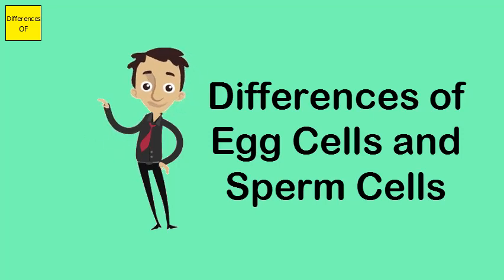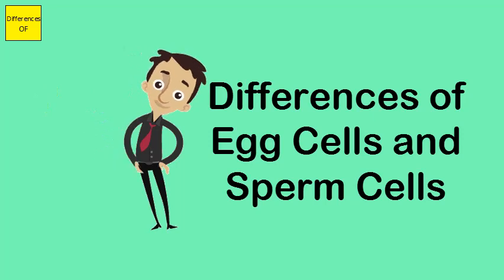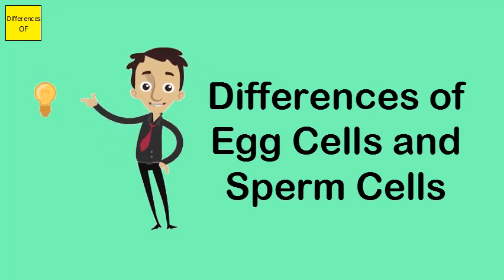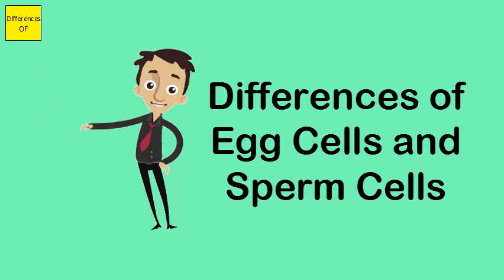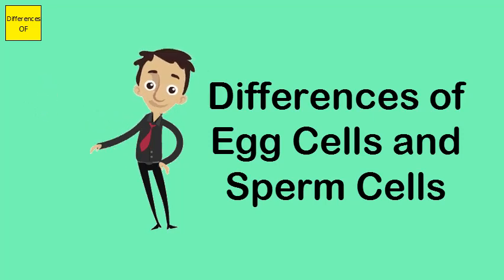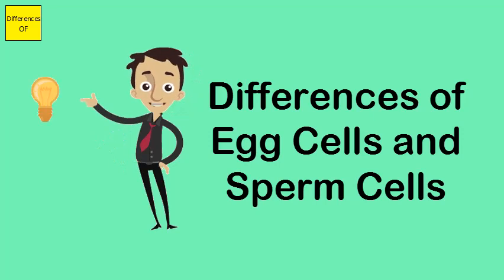Egg cells can only exist for 12 to 24 hours in their natural environment, while sperm cells can exist for about 3 to 5 days in a woman's womb. Egg cells can't be conserved, whereas sperm cells can be conserved.